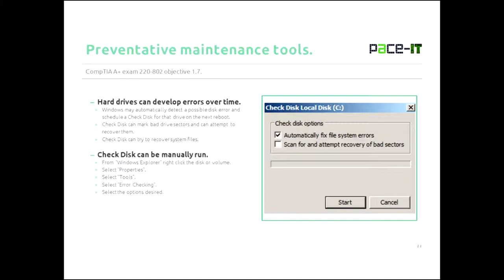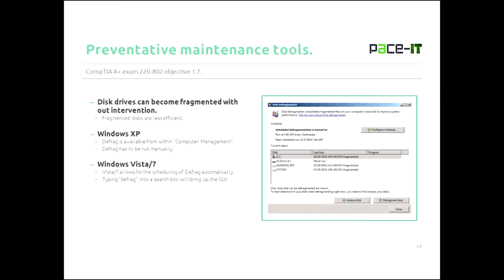As a best practice, you might want to schedule check disk to run weekly, every other week, or once a month. You can do that from the Control Panel in the System utility — at least in Windows Vista and 7 — by going to the Scheduling tab where you can schedule check disk to run.